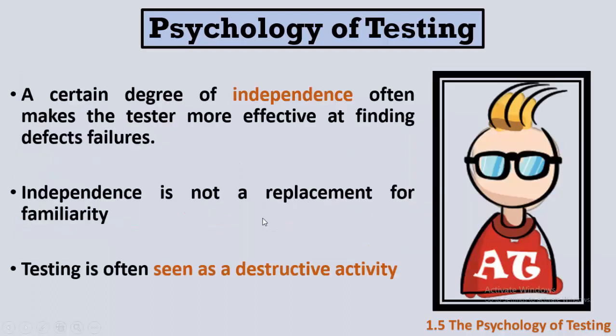The tester needs to have a certain degree of independence so that he can find defects more effectively. If the tester is not independent, he is essentially like the developer who wrote the software. However, this independence is not a replacement for familiarity — we don't say the tester knows nothing about the software and at the end we simply give it to him to test. He also has to be familiar with the software he is going to test.